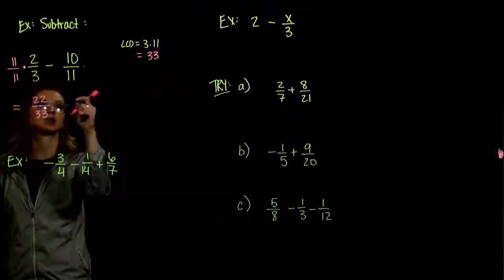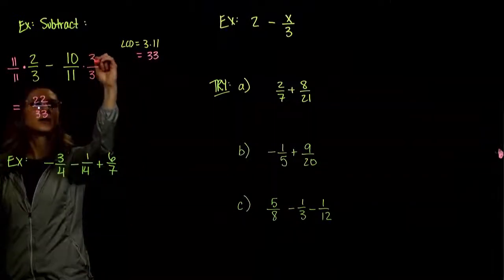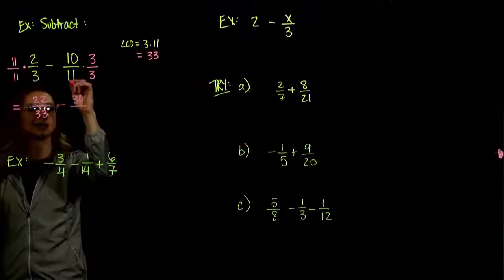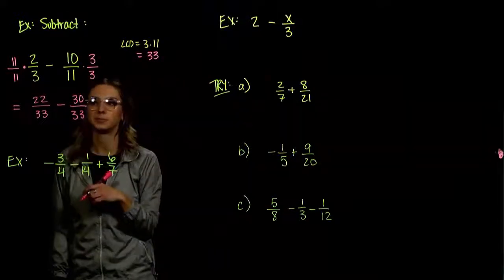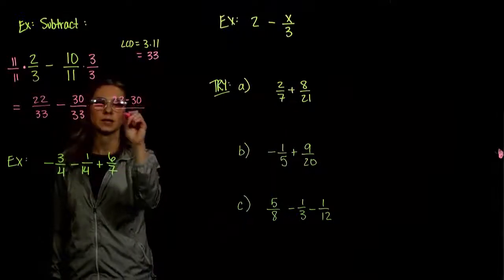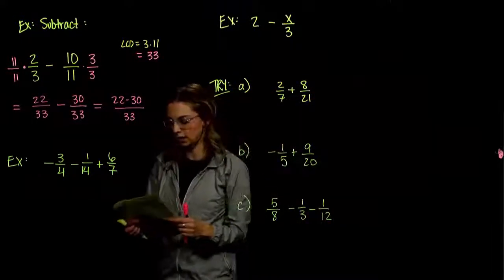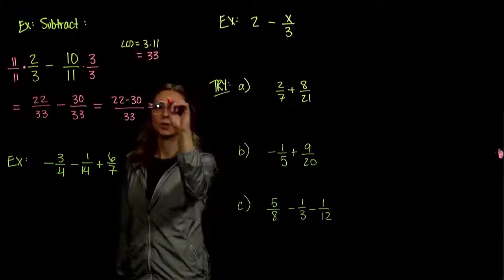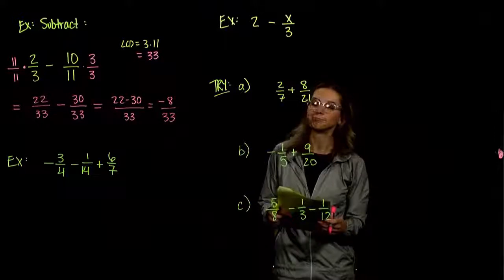We'll do the same for the second fraction. To turn 11 into 33, we multiply by 3. Whatever we do to the bottom, we have to do to the top, so we're subtracting off 10 times 3 is 30 up top, and 11 times 3 is 33. Now that we have the common denominator, subtract across the top and keep the same denominator. Which holds more weight — the positive or the negative? The negative. The difference between 30 and 22 gives us minus 8 over 33, and we can't reduce that, so we're done.